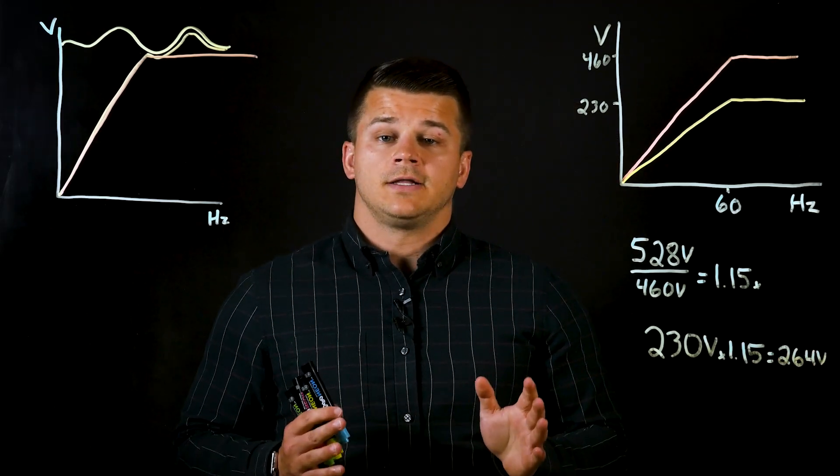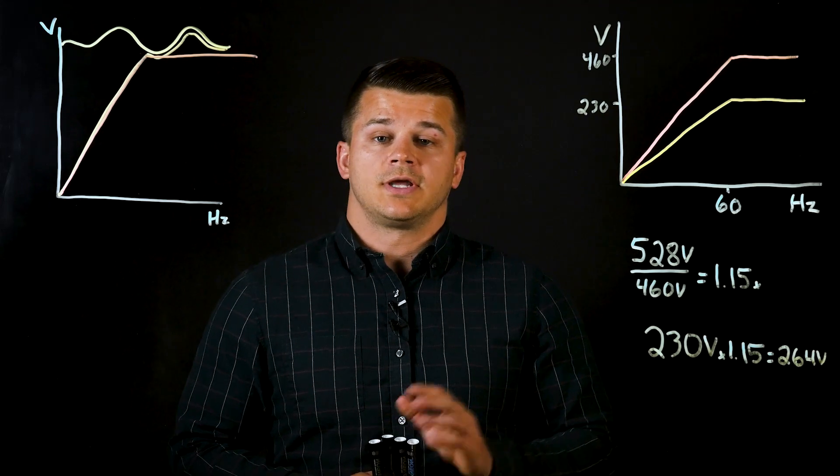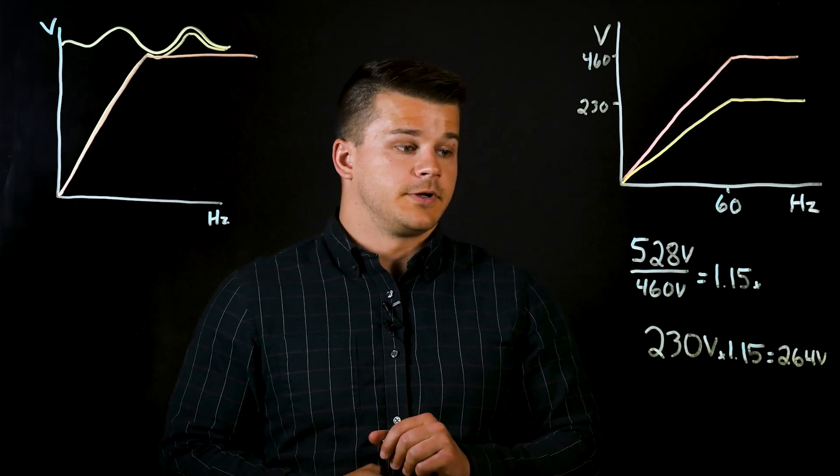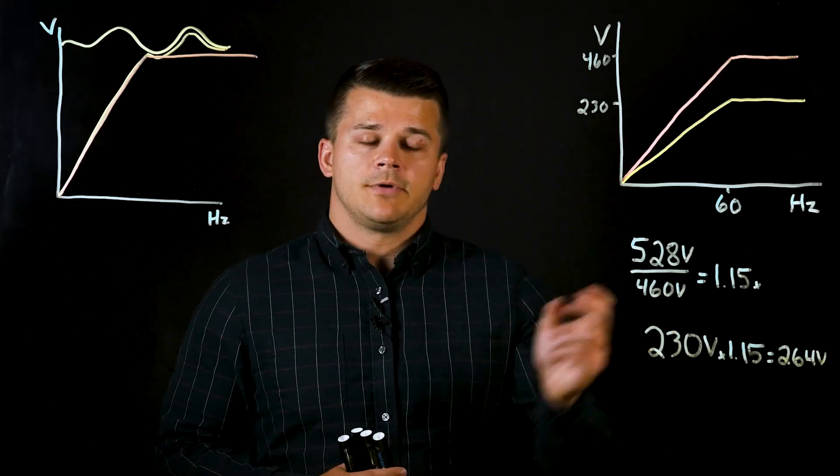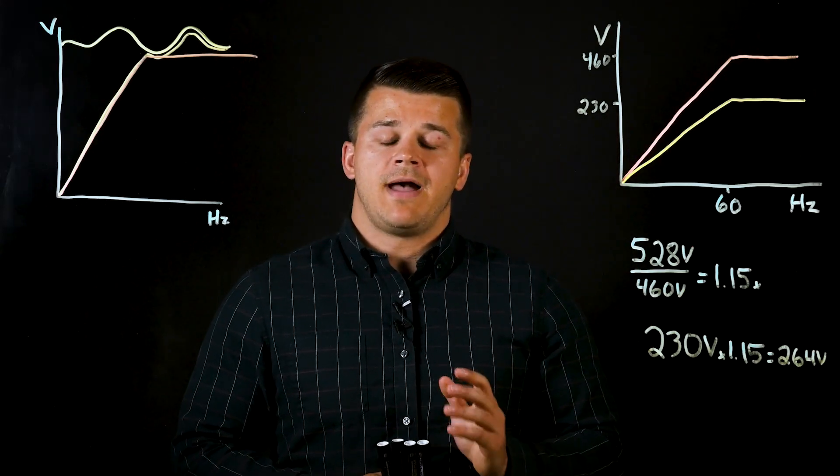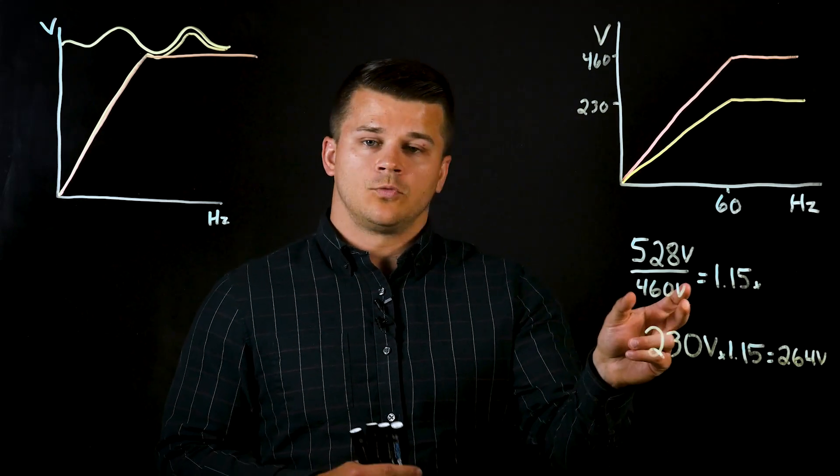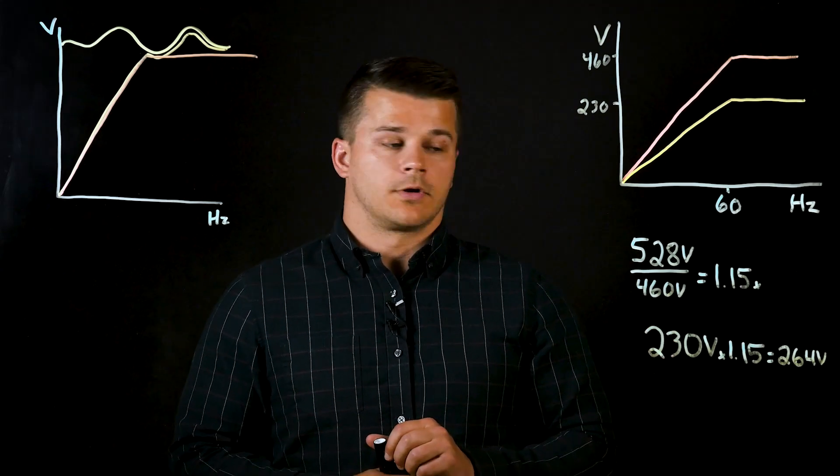So now to highlight how the voltage stabilization can affect the output voltage to the motor, we'll get into the numbers behind the theory. This top number here, the 528 volts, is the max allowable input voltage to the KEB drive, and the 460 volts would be a typical rated voltage for a motor.